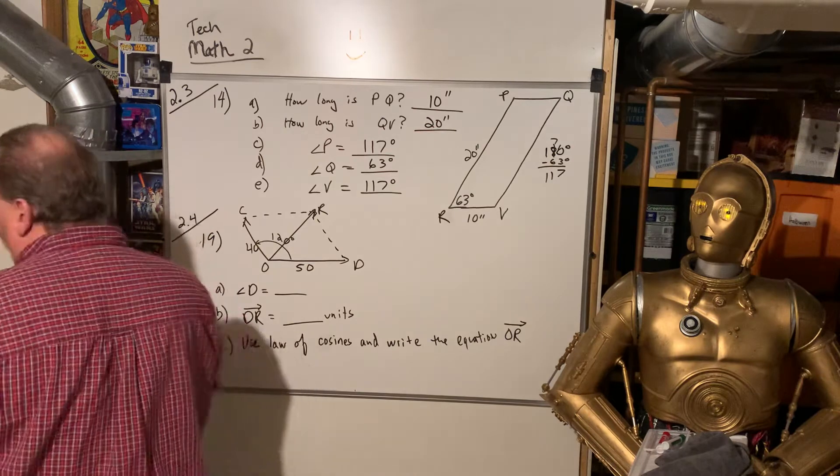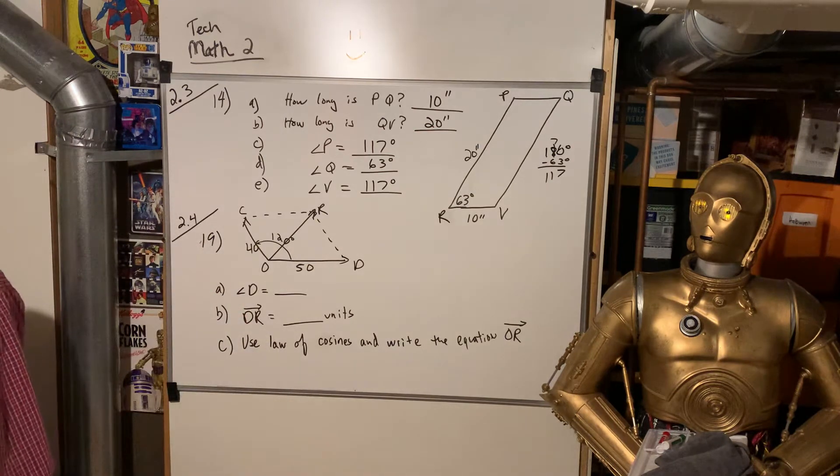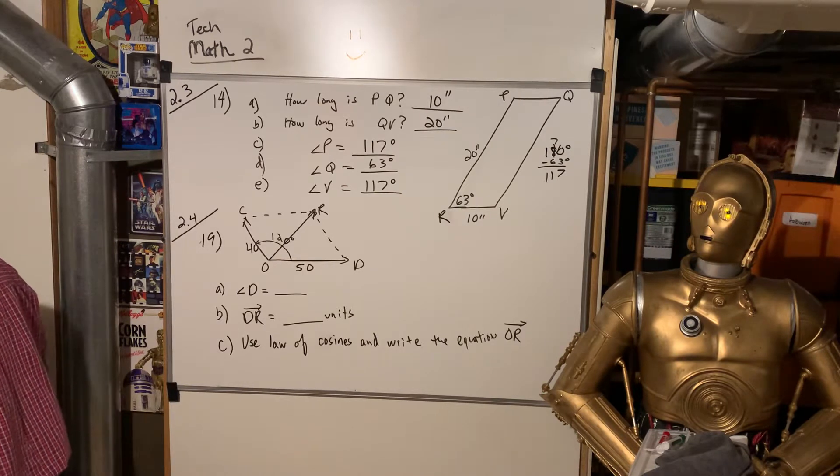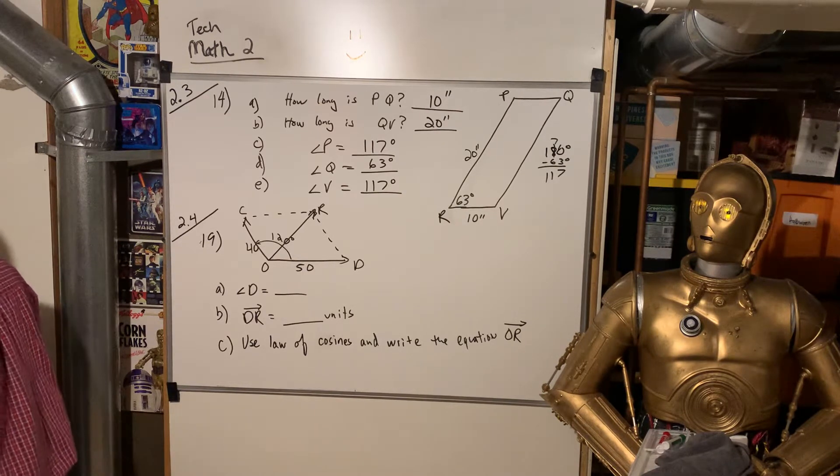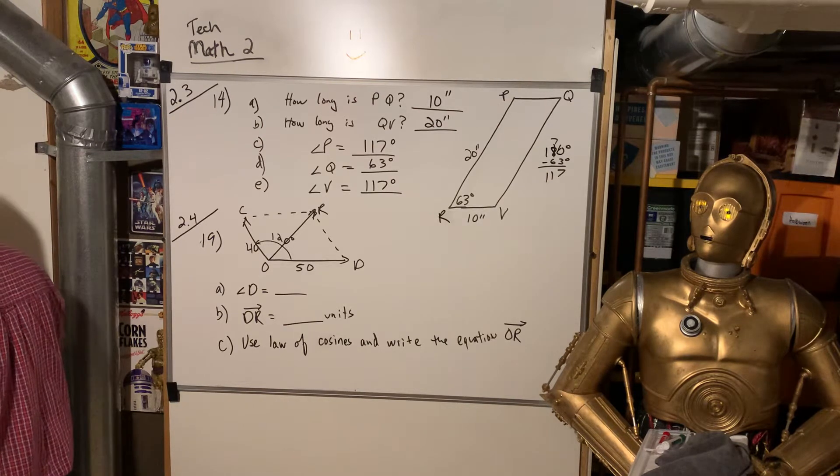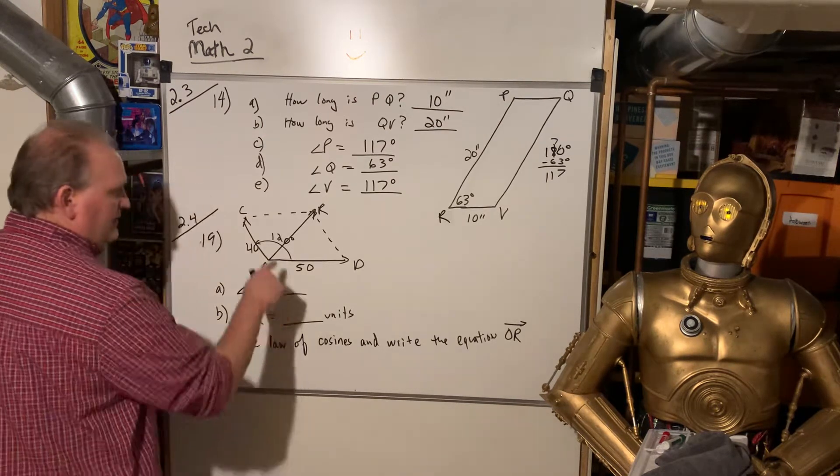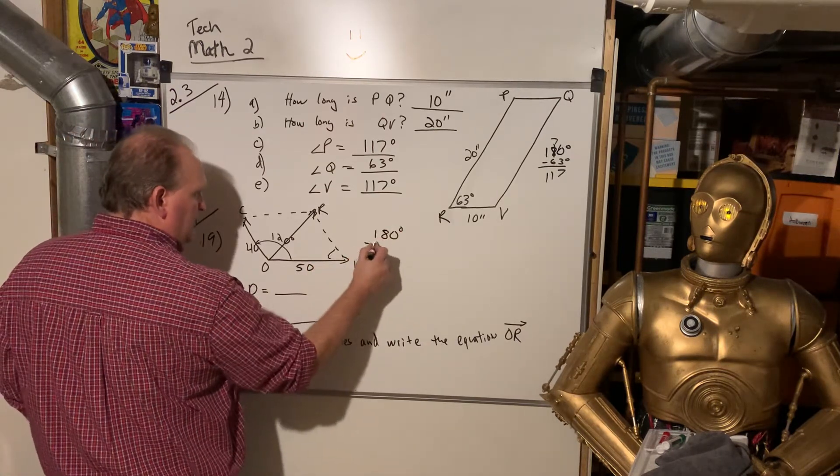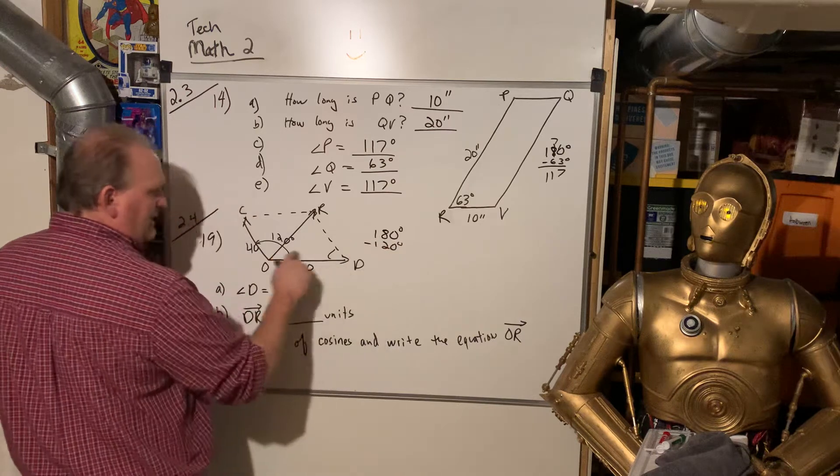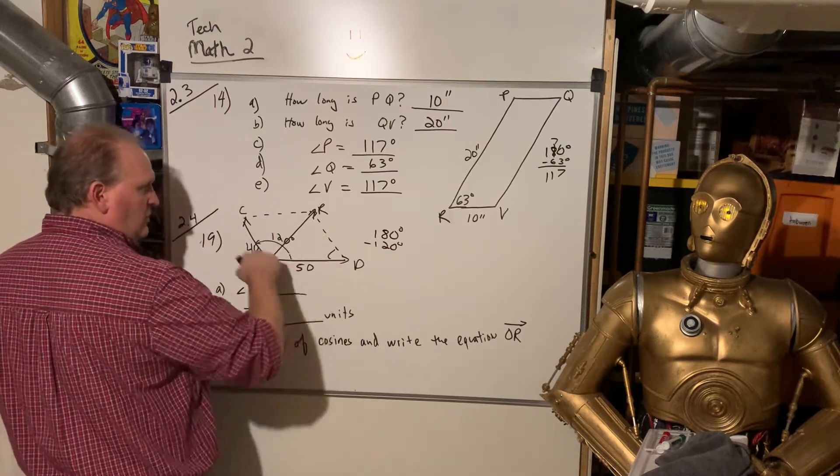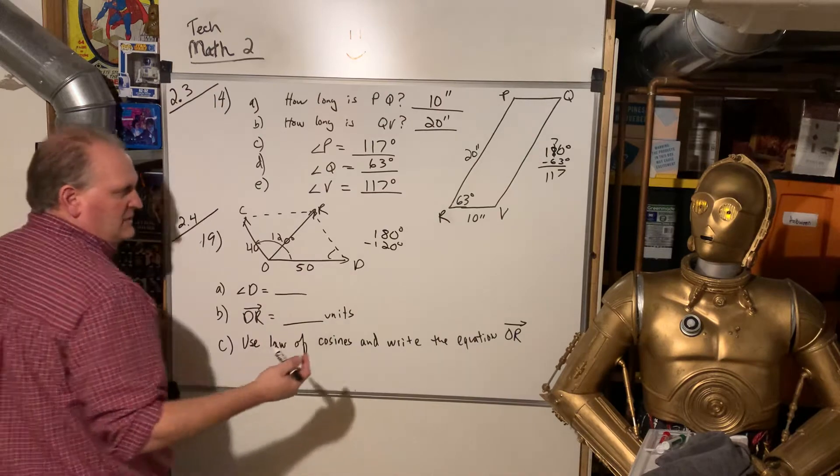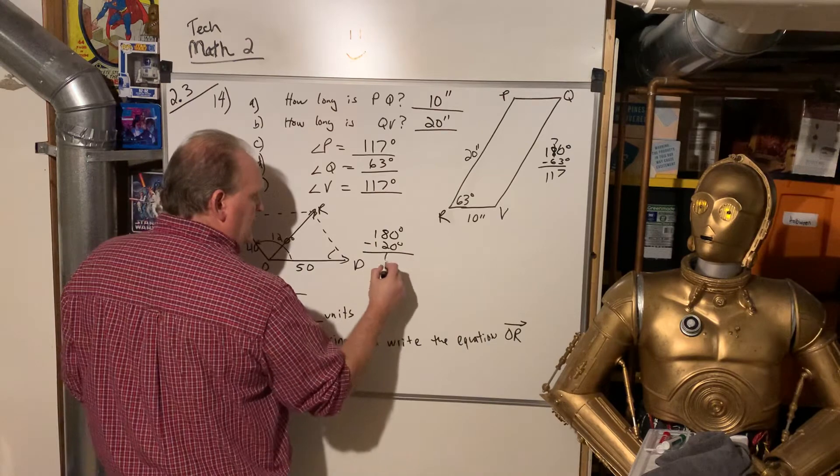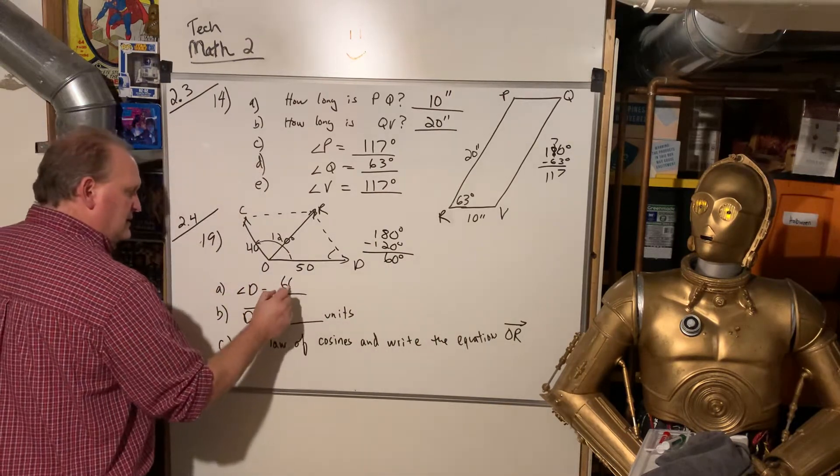So look at 2.4 on the next page, number 19. It says if angle O is 120, angle D is what? Well, again, if this is 120, then angle D is 180 minus 120. It's always got to add up to 180 degrees. The whole rectangle adds up to 360, but adjacent sides add up to 180. So that's 60 degrees. So angle D is 60 degrees.